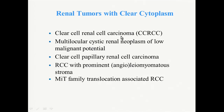When we look at tumors with clear cell cytoplasm, the most common one is clear cell renal cell carcinoma. You also have to consider the new named entity, multilocular cystic renal neoplasm of low malignant potential — in the past this was also called renal cell carcinoma, but since these tumors tend to be indolent, the name has been changed. Clear cell papillary renal cell carcinoma has been described not long ago but is actually quite common. And then renal cell carcinoma with prominent angiomyomatous stroma, and the translocation tumors — we will touch upon all of those.